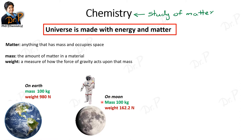The numerical value of mass stays constant while the weight has changed. The gravitational force on the moon is about one-sixth that of Earth, so dividing 980 by 6 gives the new weight. Mass doesn't depend on location — it's about the amount of material. But weight is how that amount of material feels the gravitational force.